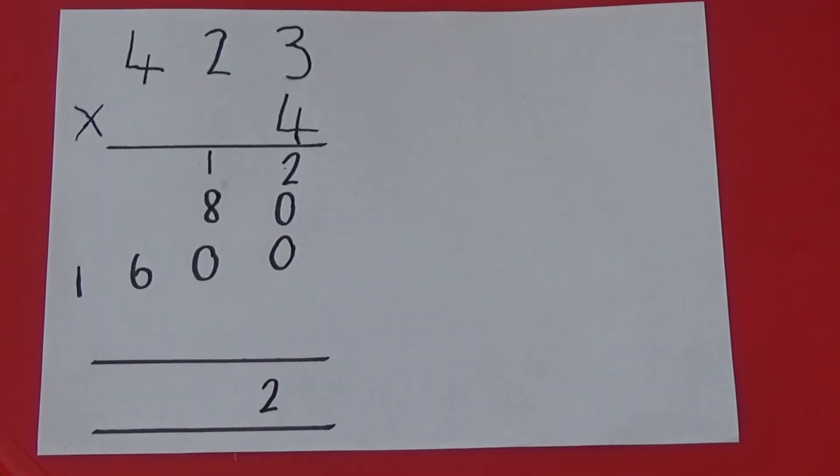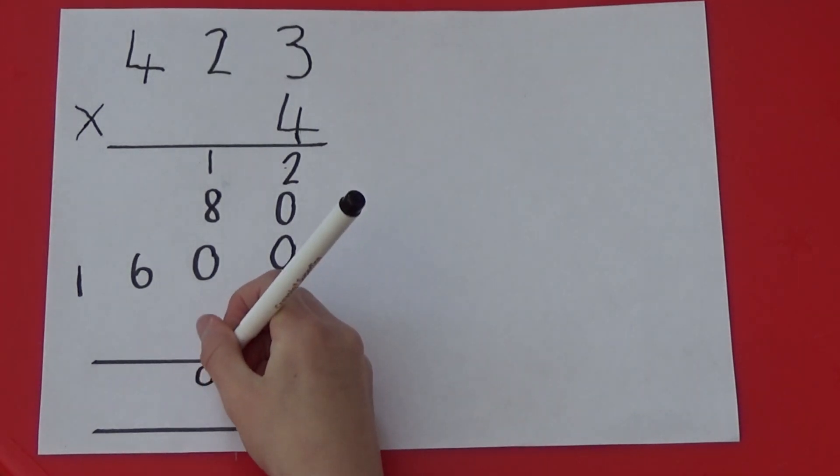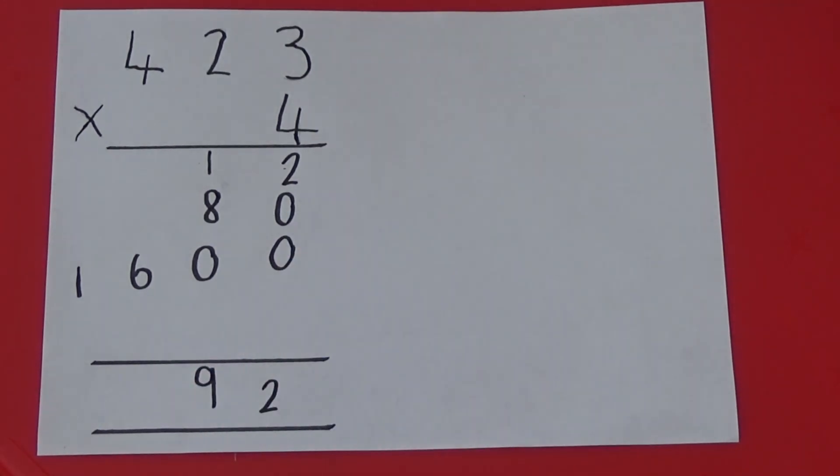Then, 1 ten, add 8 tens, equals 9 tens. After that, 6 hundreds add nothing, means we have 6 in the hundreds column.